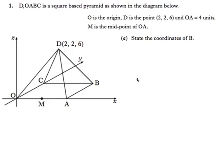This is question 1, 2011 Higher, paper 2. Part A of the question asks us to state the coordinates of point B. All this information tells us we're sitting with a square-based pyramid and we've defined the coordinates of D. Crucial piece of information: OA is 4 units, so the length of this side of the square is 4 units.